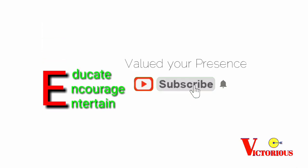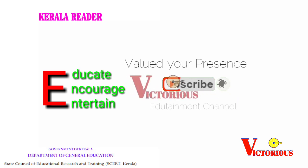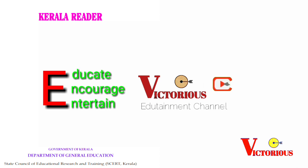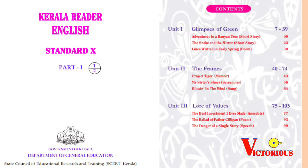Warm welcome to everyone to this entertainment channel. Today we are going to talk about 10th grade English. This is the first part of your English textbook, containing three units. Each unit contains specific theme-based content. The three units are: first, Glimpses of Green; second, The Flames; and the third unit is Law of Values.